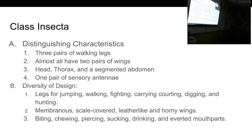Arthropods all have an exoskeleton, paired jointed appendages, and segmented bodies. For insects, we get a little bit more specific. Insects all have three pairs of walking legs — they all have six legs. So if you see a bug that has more than six legs, it is still an arthropod, but it's not an insect.